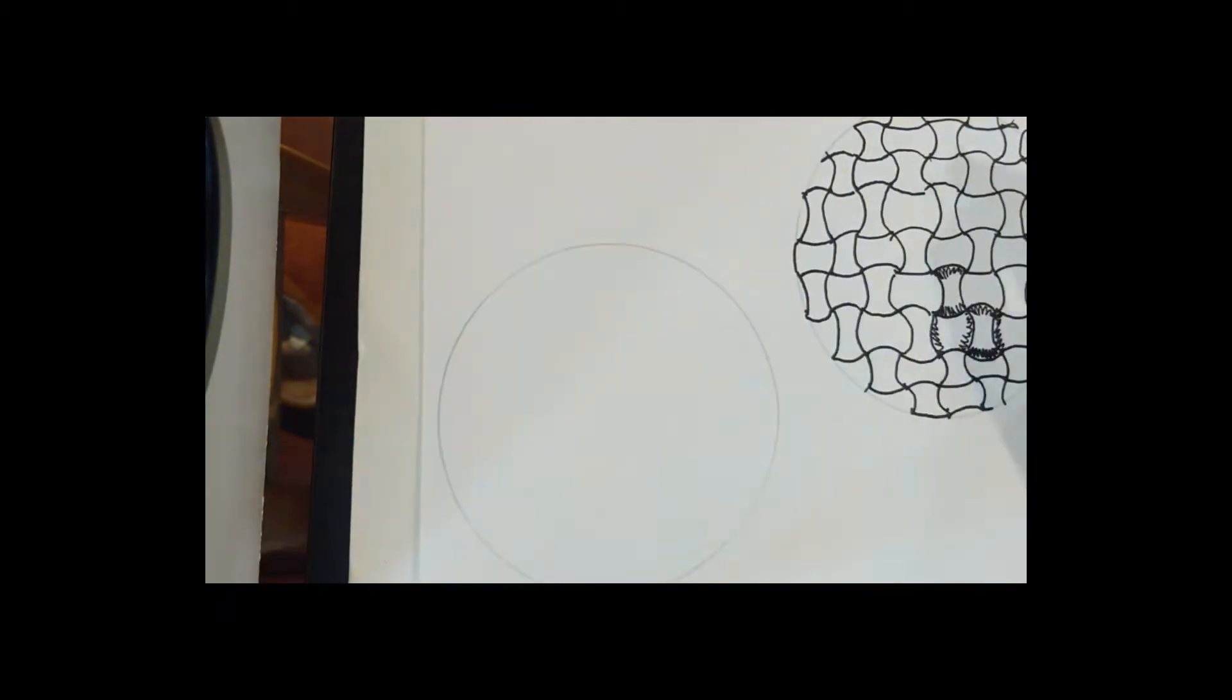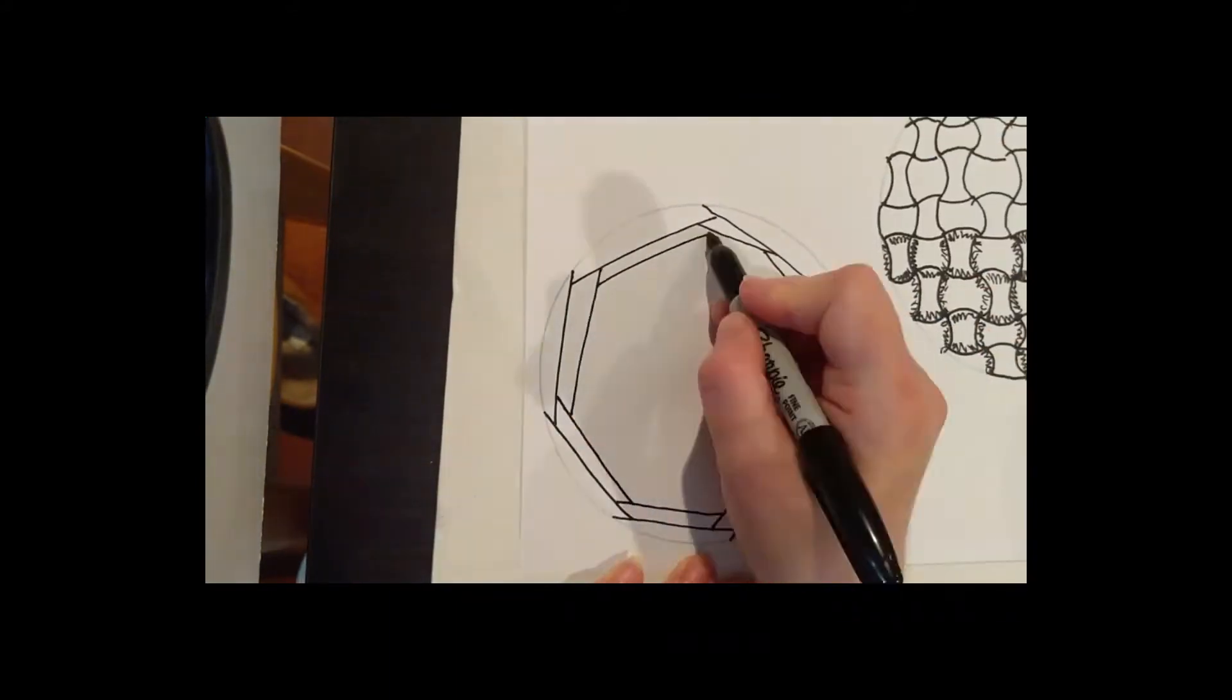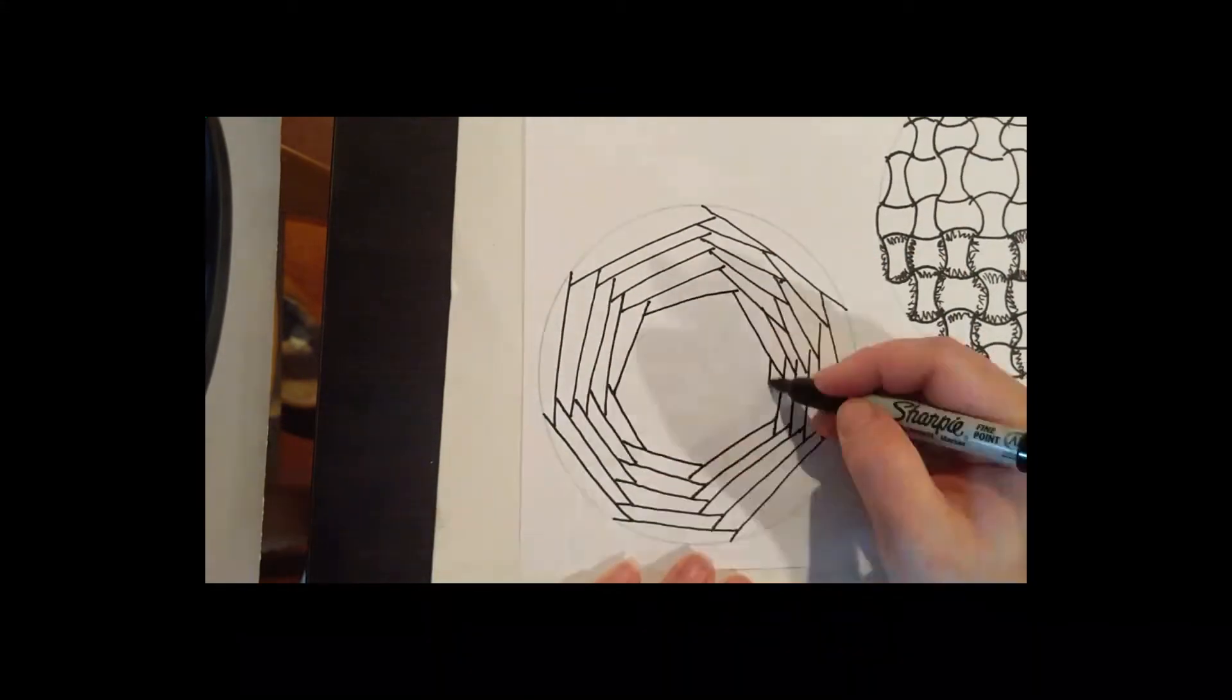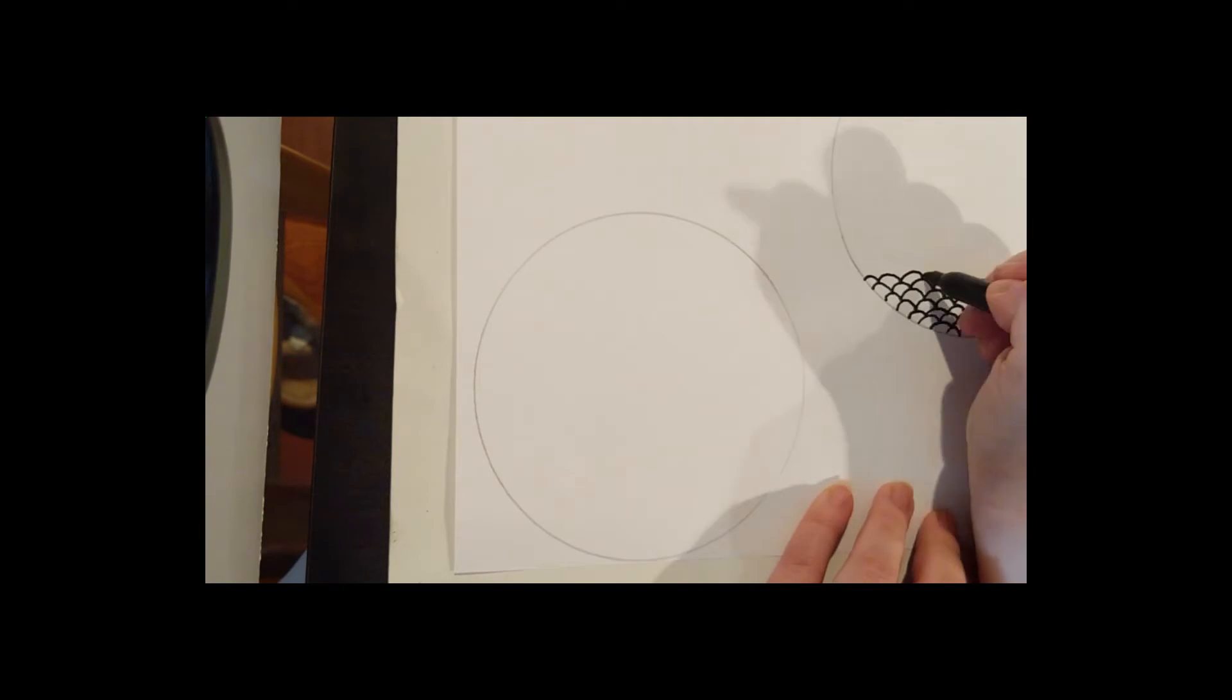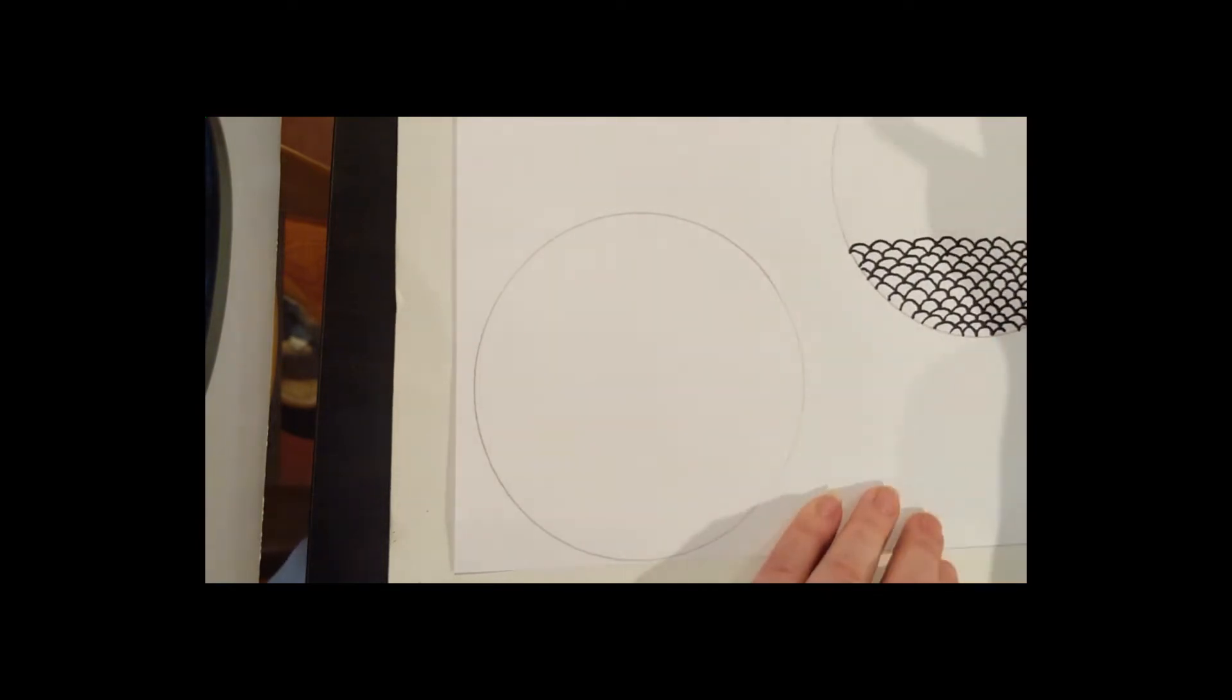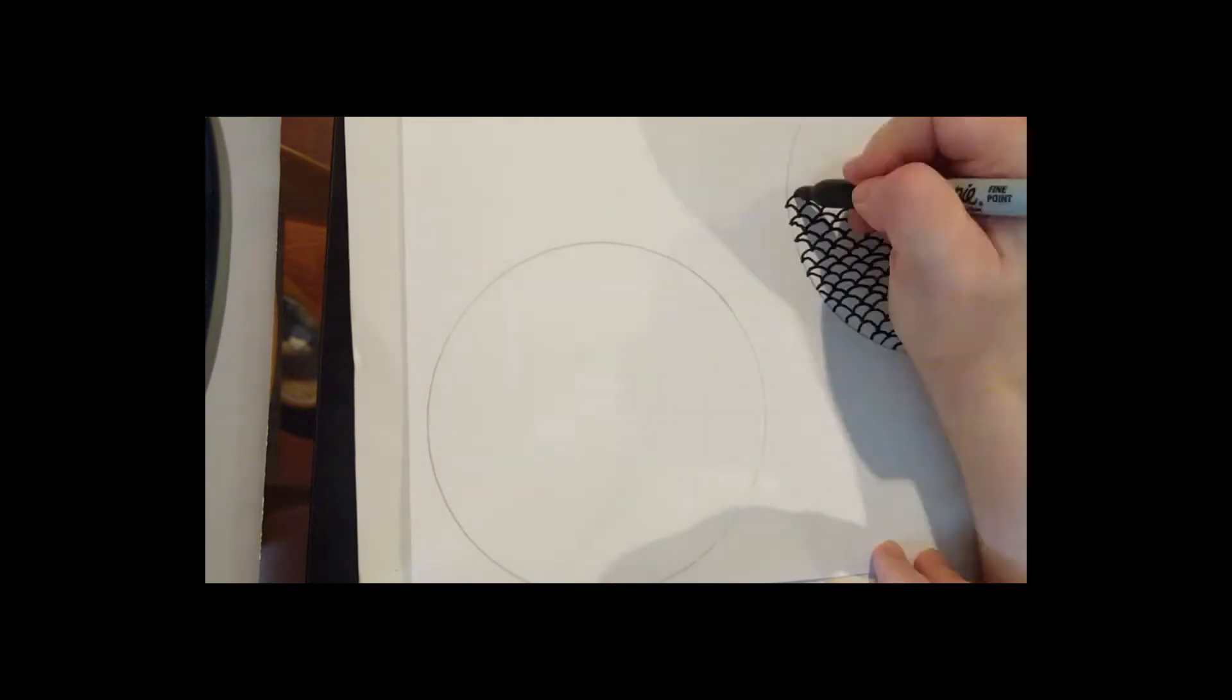This one's just sort of a little basket weave. It does look better if you use some sort of pencil or something to shade a little bit more. Some fish scales. Again, it doesn't have to be super complicated. Just make it interesting.